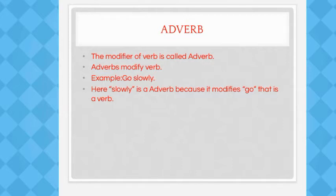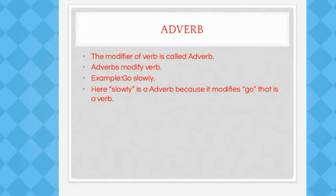The modifier of a verb is called an adverb. This word that modifies the verb is called an adverb. After the verb, in order to change the verb, it will change the verb. Here, 'slowly' is an adverb because it modifies 'go' as a verb.